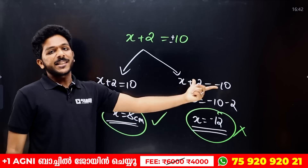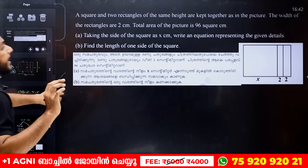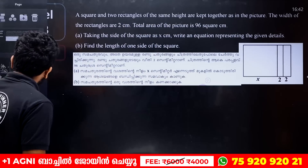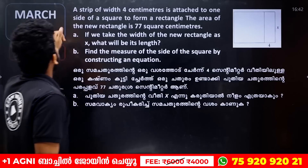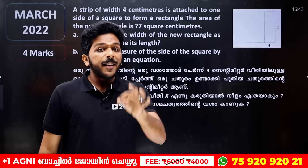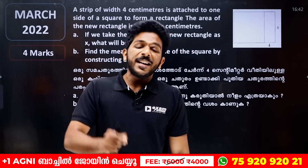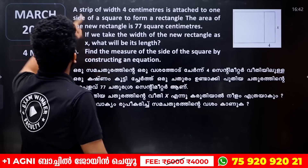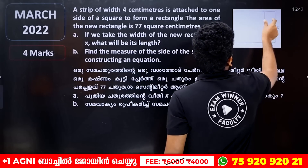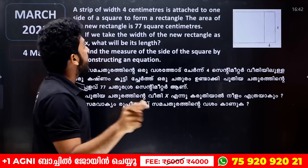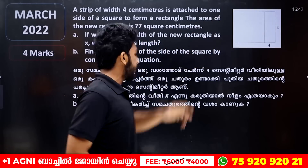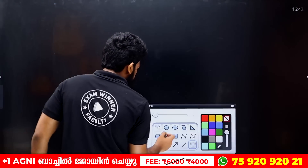Do you have any questions? That's it — we are going to answer this question. It is very important. A strip of width 4 cm. A rectangle — it is a square node. The diagram is very simple.